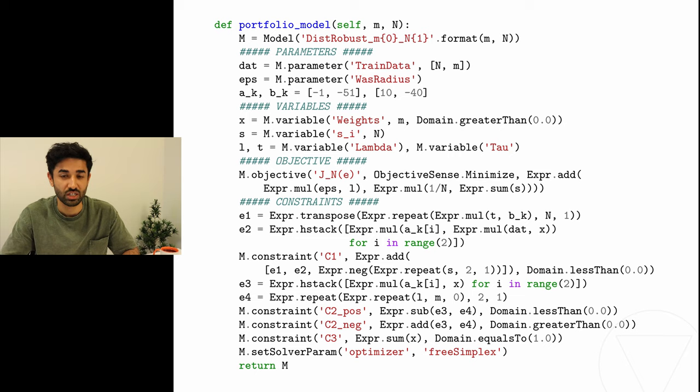Then we declare the variables. Variable x corresponds to the positive asset weights. Variable s corresponds to sᵢ as stated in the program in equation number 14. And l and t are variables that correspond to λ and τ respectively. Next, we define the objective of the problem. This is pretty straightforward and we just call the relevant method for the model object and declare the objective sense along with the expression of the objective.